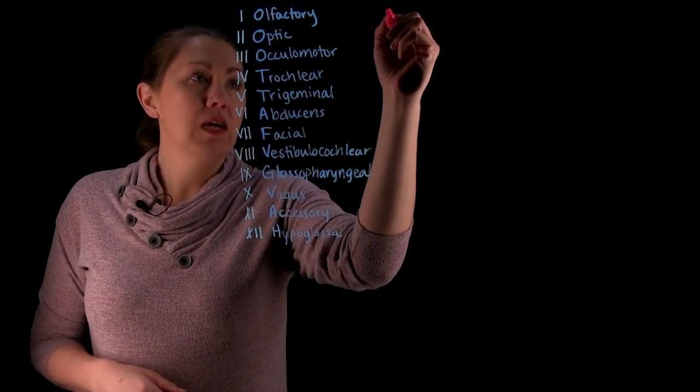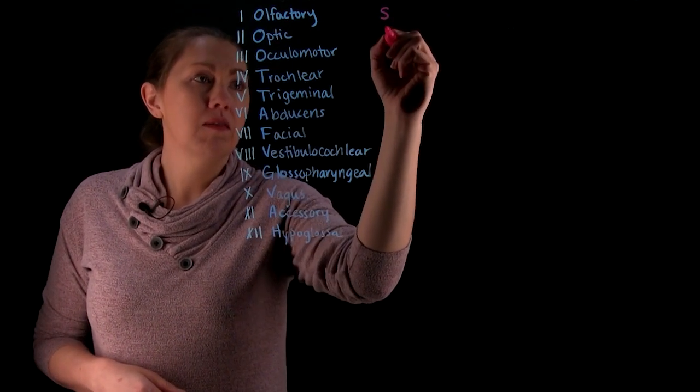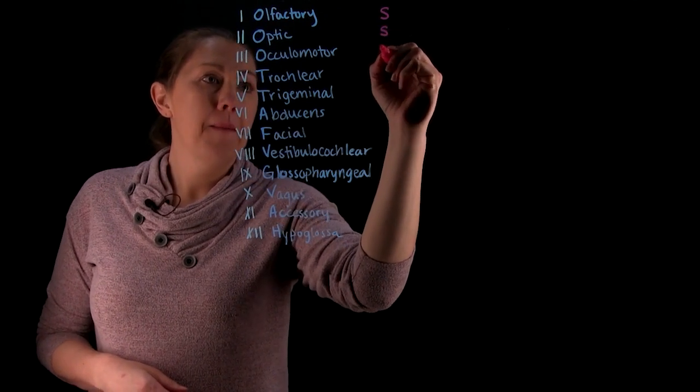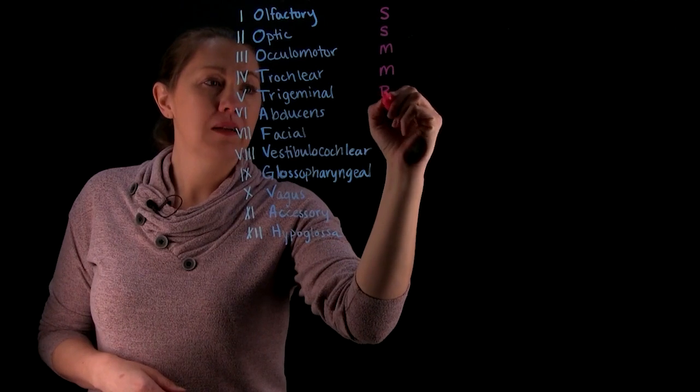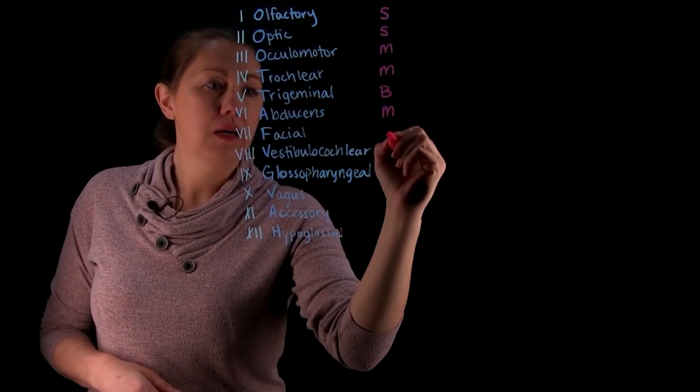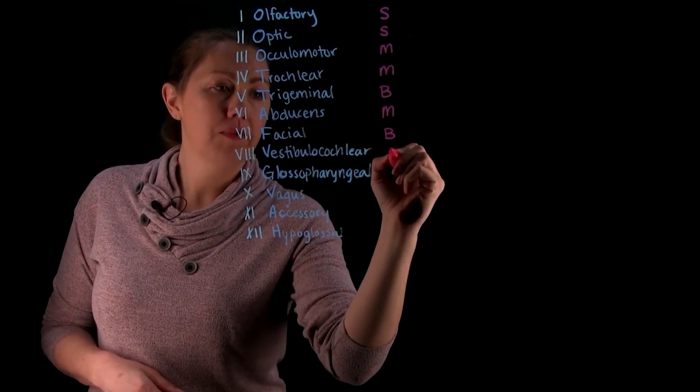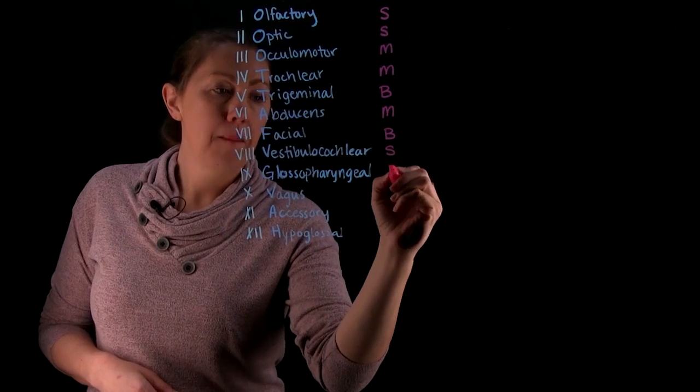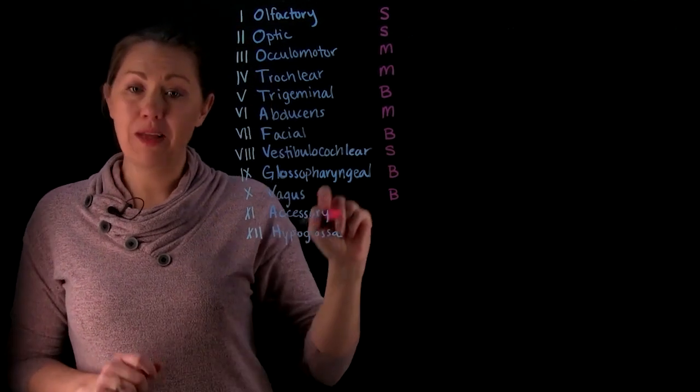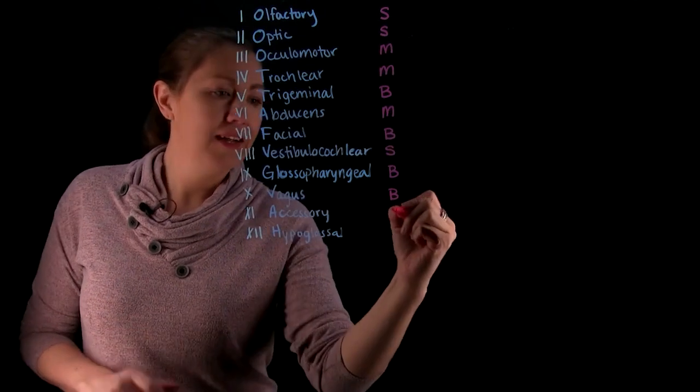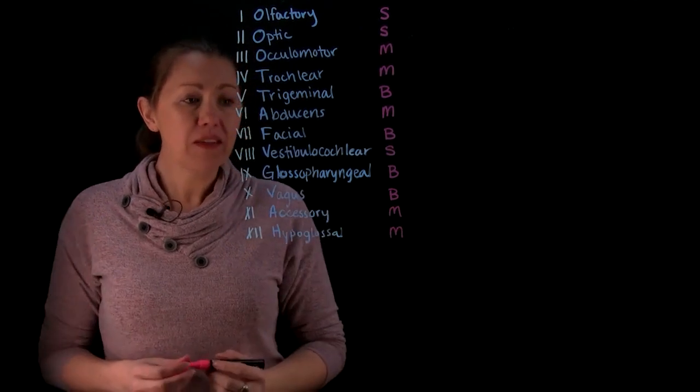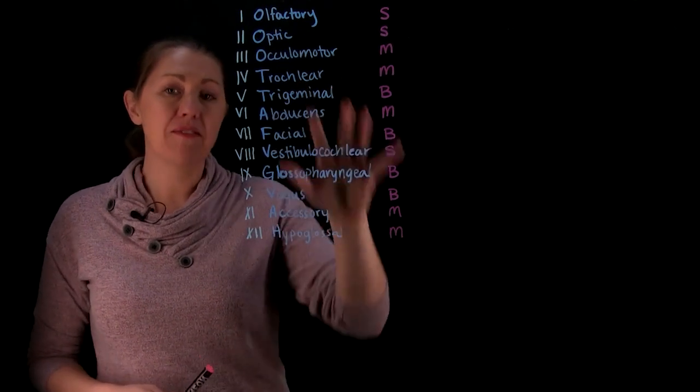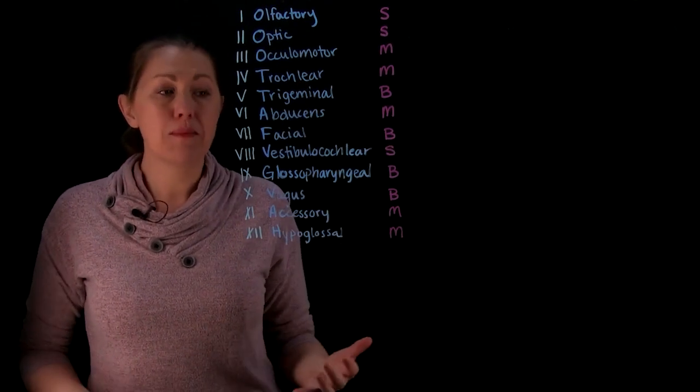And so that's what we're going to be dealing with in this next column, is we're going to keep track of if it's a sensory nerve, meaning information coming in, if it's a motor nerve, information going out, or if it's both, if it has technically classified as a mixed nerve. And again, I'm going to give you a mnemonic for that. So the one that I use is some say marry money, but my brother says big brains matter more.